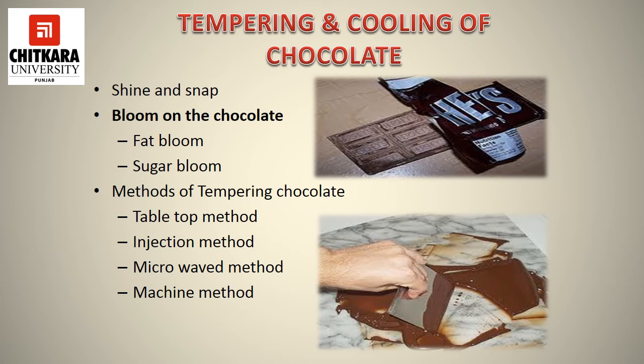Tempering is heating and cooling chocolate to stabilize it for making candies and confections. It gives chocolate a smooth glossy finish, keeps it from easily melting on your fingers, and allows it to set up beautifully for dipped and chocolate-covered treats. The basic features of shine and snap are provided to the chocolate through tempering. Chocolate also faces the fault of chocolate bloom, which is of two types: fat bloom, caused by changes in the fat crystals in the chocolate, and sugar bloom, caused by the action of moisture on the chocolate. The methods of tempering chocolate include the tabletop method, the injection method, the microwave method, and the machine method.